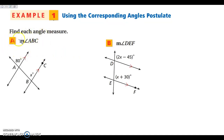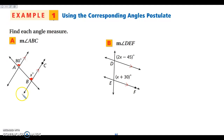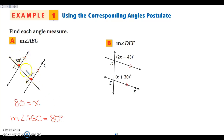Let's look at example A. I want to find the measure of angle ABC, which is this angle right here. I need to find its relationship with the angle that is 80 degrees. These two angles are corresponding angles, so they are congruent and equal to each other. So x is equal to 80, meaning the measure of angle ABC is 80 degrees.